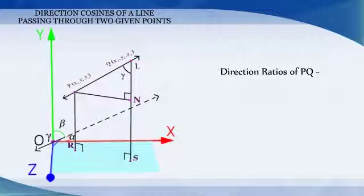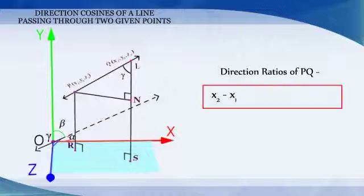The direction ratios of the line segment joining P(x₁, y₁, z₁) and Q(x₂, y₂, z₂) may be taken as x₂ - x₁, y₂ - y₁ and z₂ - z₁.